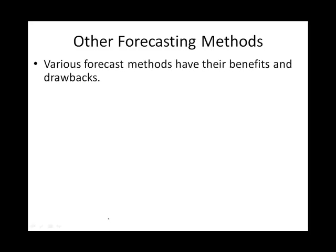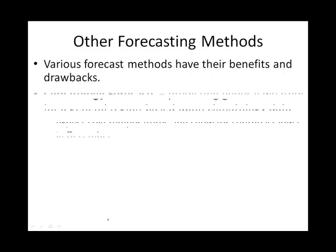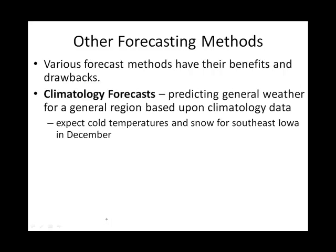In general, some of these do involve computers, but we can look at different approaches to forecasting the weather. For instance, there's climatology forecasting, which is kind of the most vague sort of forecast — it's very general. A climatology forecast for this area in December would be that we can expect snow. Basically, you take a general region like southeast Iowa, a time of year like December, and the climate for this region at this time of year indicates snow and cold temperatures.